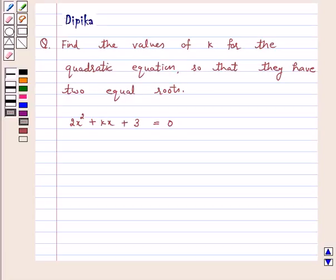Hi, welcome to the session. I am Deepika here. Let's discuss the question. Find the values of k for the quadratic equation so that they have two equal roots: 2x² + kx + 3 = 0.